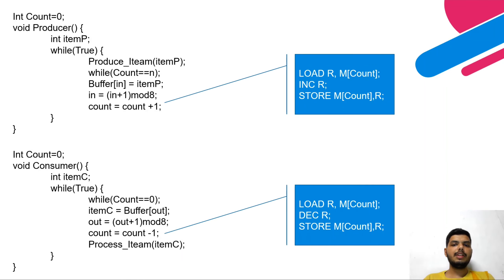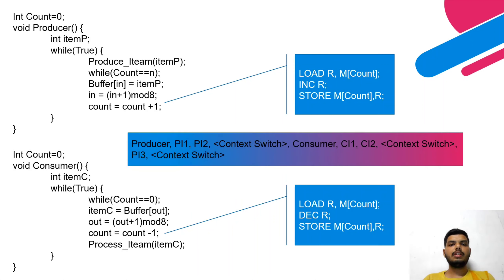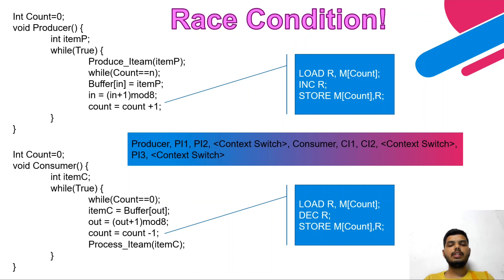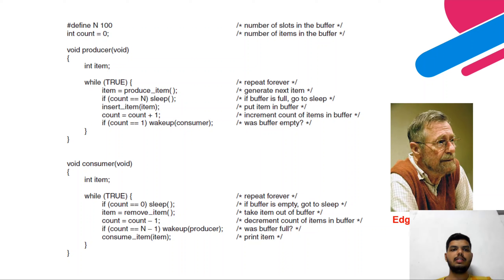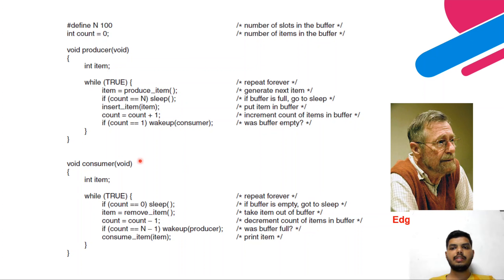That was the basic producer-consumer problem solution, but due to race conditions we saw conflicts arise. Now this is the actual solution to the classical producer-consumer problem — a very classical IPC problem. This solution was proposed by the well-known scientist Edgar W. Dijkstra, as you can see on the right-hand side.